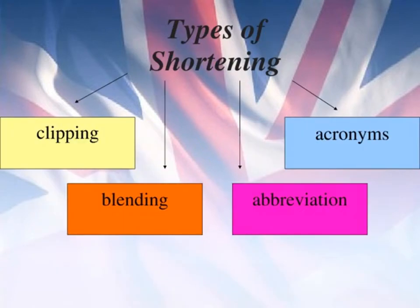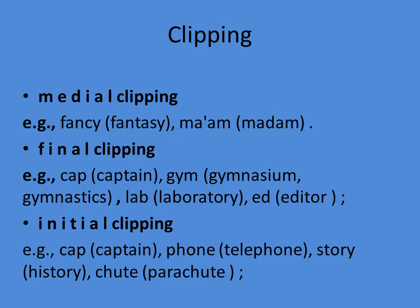There are such types of shortening as: clipping, blending, abbreviation, and acronyms. Clipping is a type of word building — shortening of spoken words. Types of clipping include medial clipping, from Greek meaning 'cutting up,' for example fancy from fantasy, or man from madam. Final clipping means 'cut off,' for example cap from captain, or gym from gymnasium.